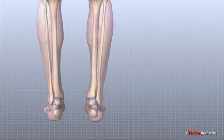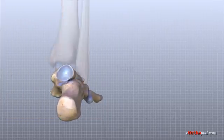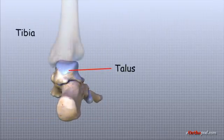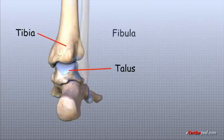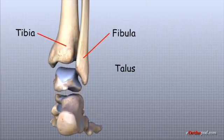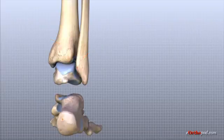The ankle joint is formed by the connection of three bones: the talus, the tibia, and the fibula. The top of the talus fits inside a socket that is formed by the lower ends of the tibia and the fibula.